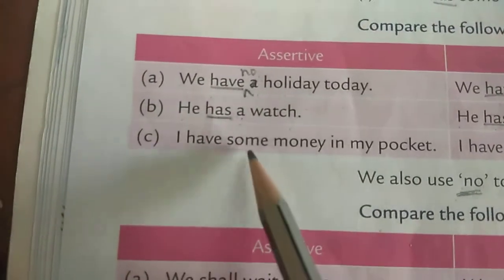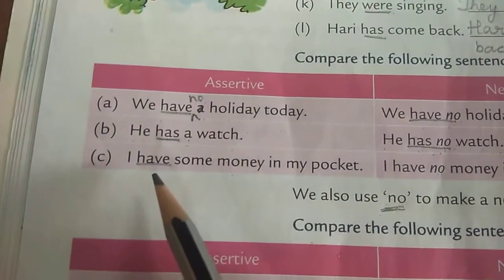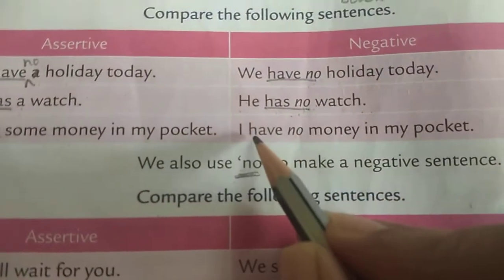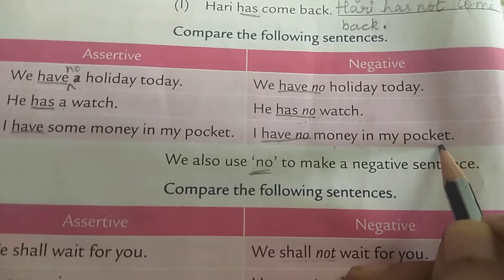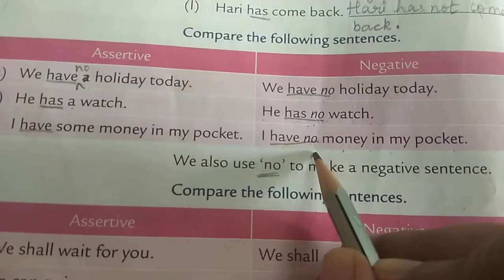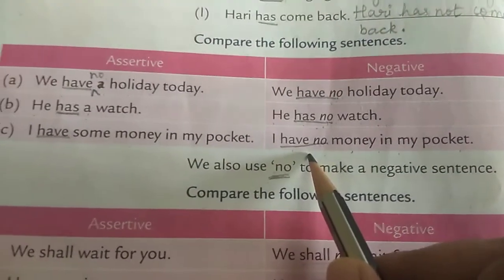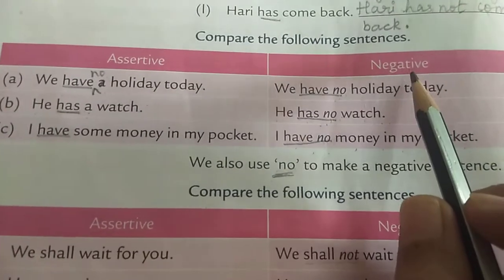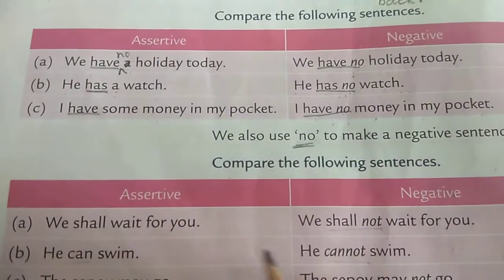The next sentence: 'I have some money in my pocket.' The helping verb is 'have'. Here there is no article, so we don't have to remove anything — we just add 'no': 'I have no money in my pocket.' After the helping verb, add 'no'; if there is an article before the noun, remove it when changing into negative.